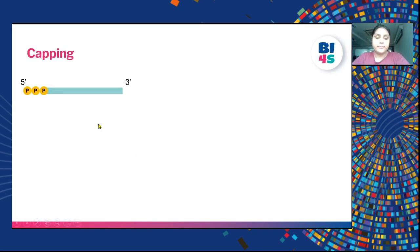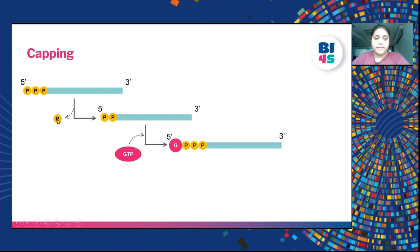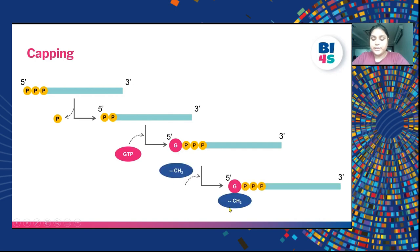Capping: at the 5' end of any RNA, there are 3 phosphate groups on the nucleotide base. One phosphate is removed and replaced by a bond with GTP. This GTP is then methylated — a CH3 group is added — to make the 5' methylguanosine cap of the mRNA.